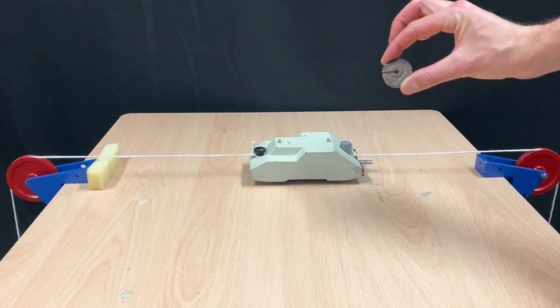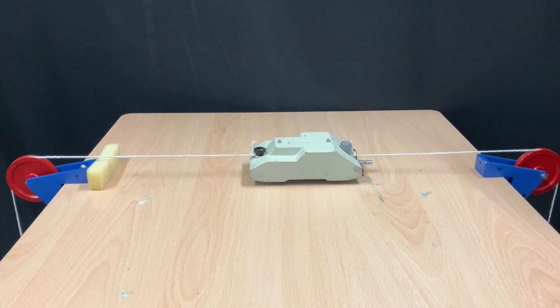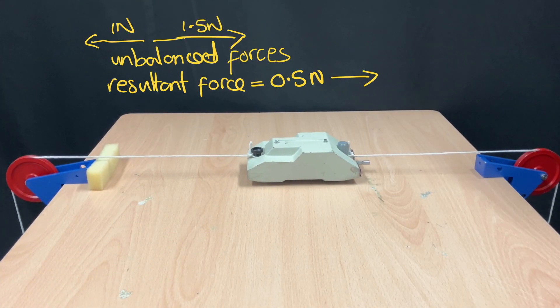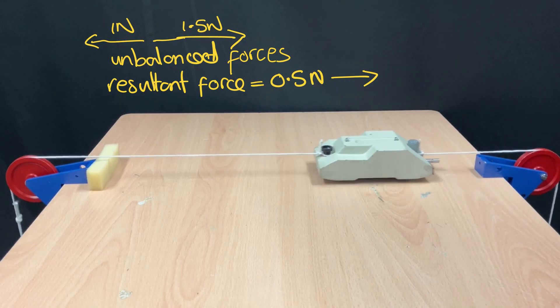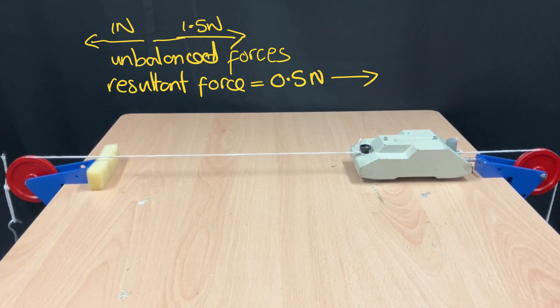But let's see what happens if I add half a newton extra weight on the right. Now I've got a resultant force to the right and the trolley accelerates to the right.